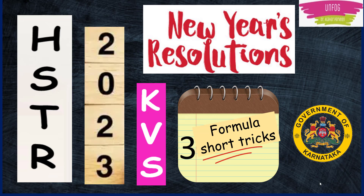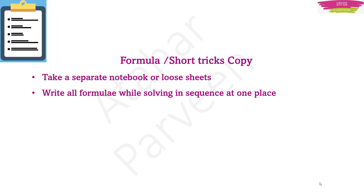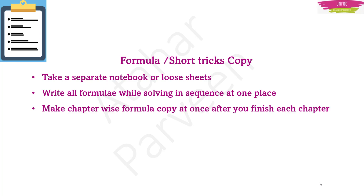So let us start making this New Year's resolution — making a formula list and adding short tricks to that list. What you have to do first is, as I told you in the previous resolution about making notes, either take one separate notebook or one loose sheet. Insert it after each chapter — if it is a loose sheet, or if it is a book, leave two or three pages after each chapter. You can use one page for making the formula list. Write all formulae while solving the chapter in sequence at one place. Read one chapter, prepare it, and make a chapter-wise formula copy at once after you finish each chapter.